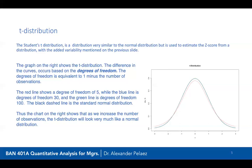Looking at the t-distribution chart with different degrees of freedom: the red line shows degrees of freedom 5, the blue line is degrees of freedom 30, the green line is degrees of freedom 100, and the black dashed line is the normal distribution. You can see that the more data you have, the more the t-distribution resembles the normal distribution. This is consistent with the central limit theorem — everything tends toward normal — and the t-distribution is no different.